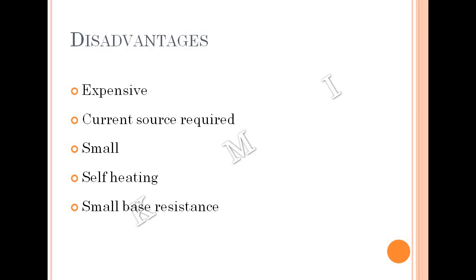To summarize, we have discussed thermal sensors. There are three types: RTDs, thermistors, and thermocouples. For RTDs, we covered the definition, working principle, materials, applications, advantages, and disadvantages.